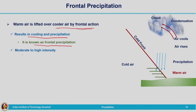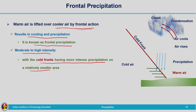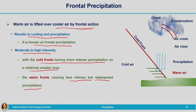These types of precipitation are of moderate to high intensity, with cold fronts having more intense precipitation on a relatively smaller area. If the precipitation is due to formation of a cold front it will have more intense precipitation on a relatively smaller area. On the other hand, if there is formation of a warm front, it will produce less intense but widespread precipitation.